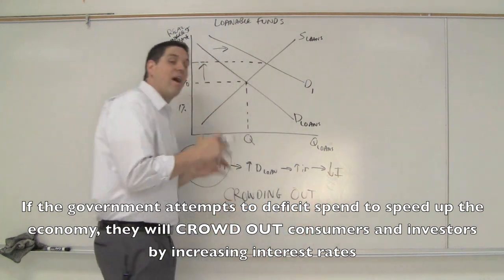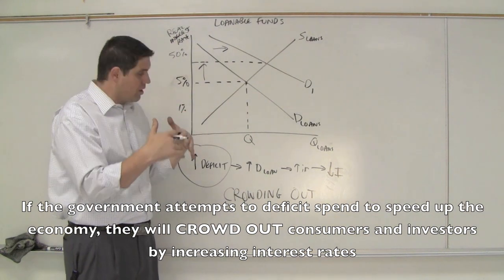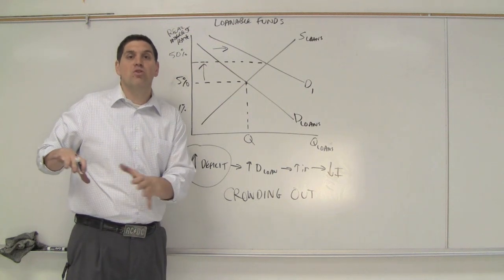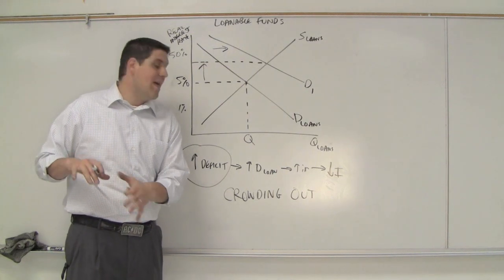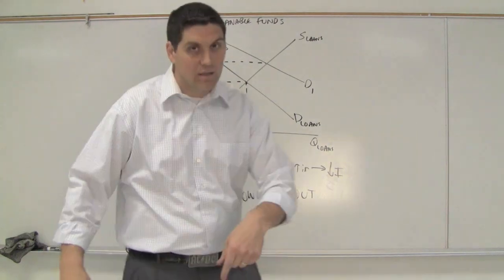Crowding out is the idea that the government does something to try to improve the economy when they actually hurt it a little bit by increasing interest rates, or blocking out or crowding out consumers or investors from doing something they would have normally done had the government not done this. Crowding out is a key concept. Make sure you got it. Till next time.